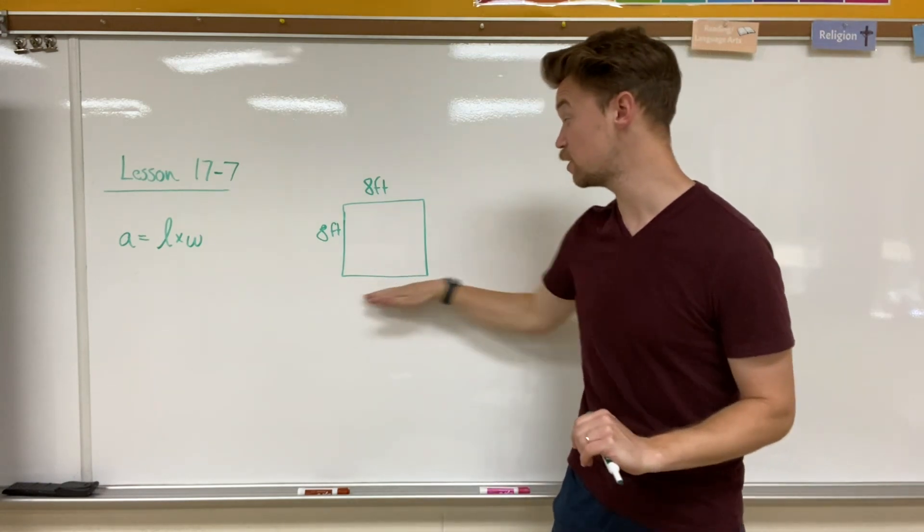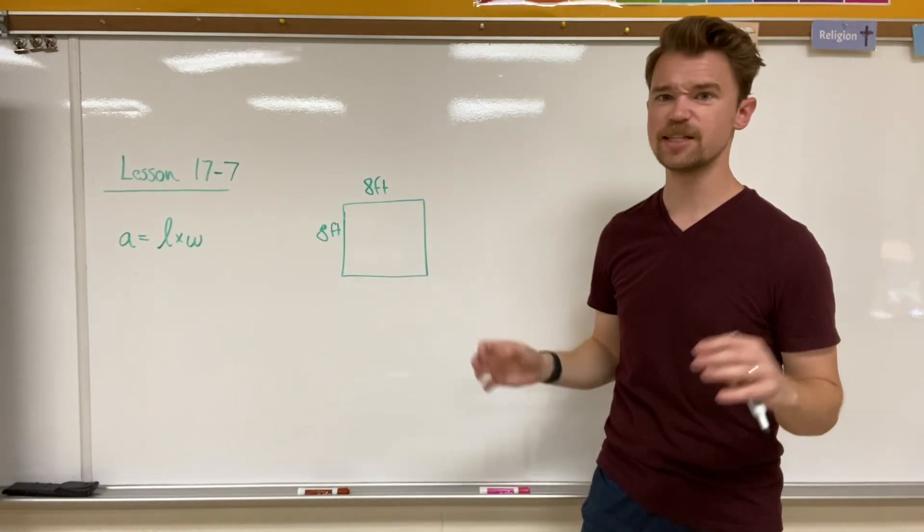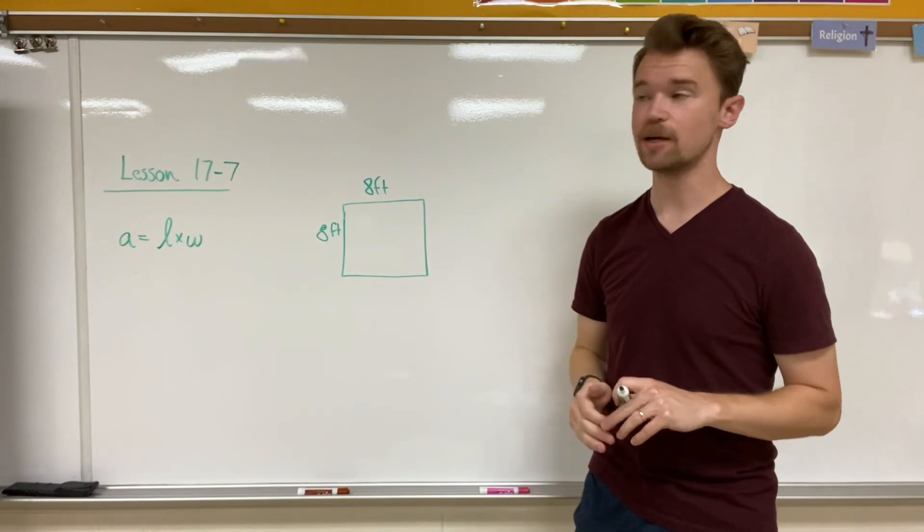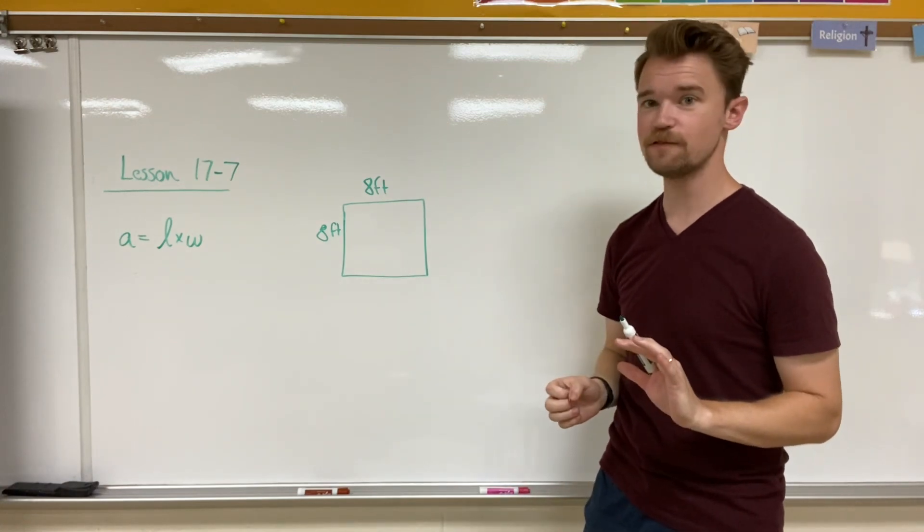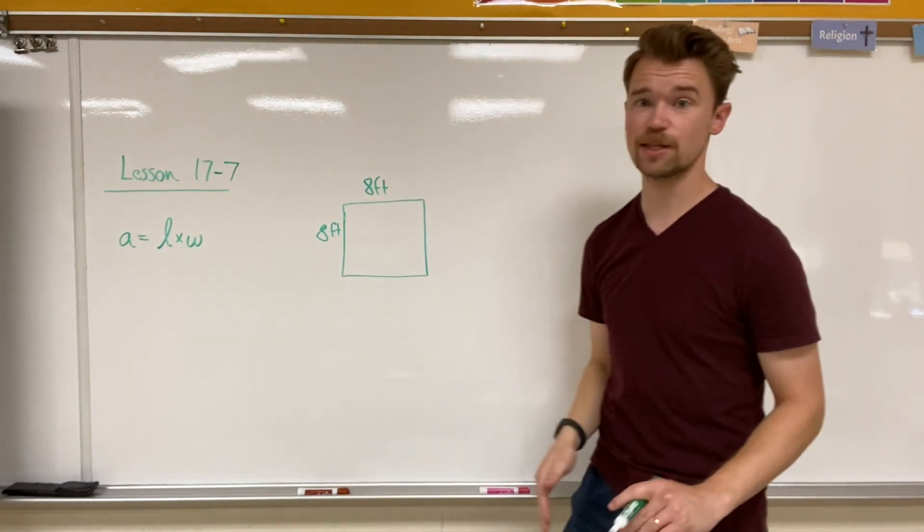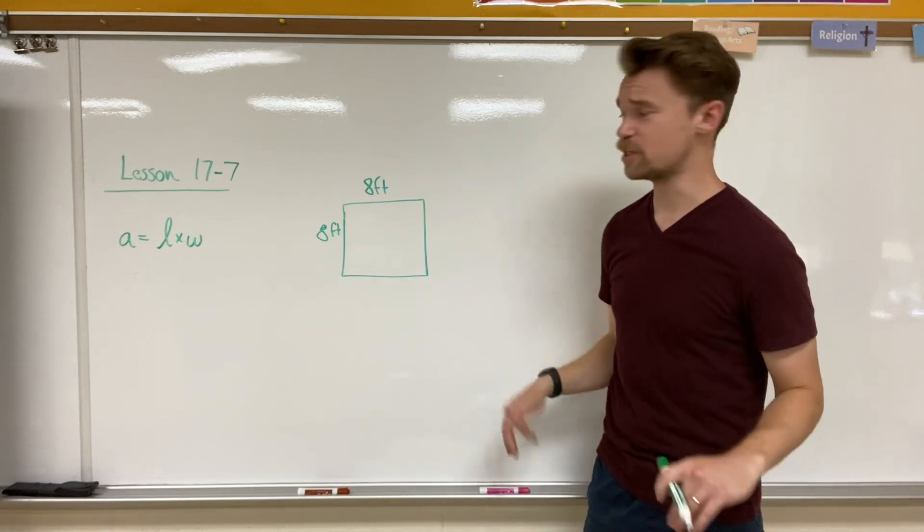Now perimeter was finding the distance along the outside of a shape, but area is trying to find the contents of the middle or the space that it takes up in the middle. So to find area, the formula is length times width, or your book says side times side. It's essentially the same thing.